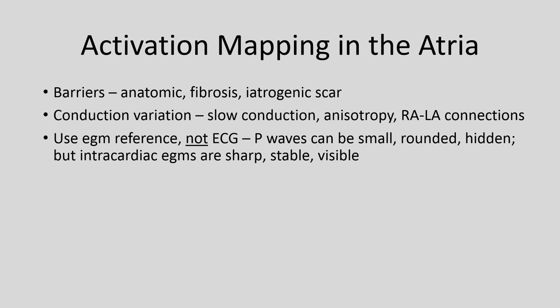You can also have more variability in conduction, including areas of slow conduction in scar and directionality called anisotropy — meaning signals travel preferentially in one direction rather than perpendicular to it. It is very important when creating an activation map in the atria to use an intracardiac atrial electrogram, not the EKG. Using a ventricular reference is inappropriate because of variation in atrial-ventricular timing. And if you try to use a P wave, the problem is P waves can be very small, rounded rather than sharp, and often hidden behind QRS complexes and T waves, making it very difficult for the computer to reliably place the reference.